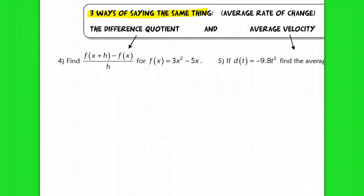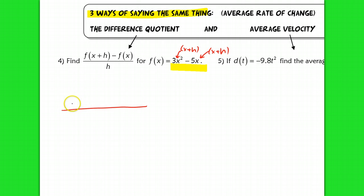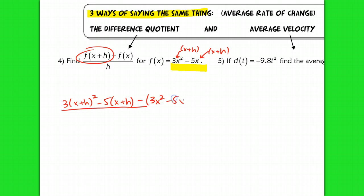Let's find the difference quotient for f(x) = 3x² − 5x. When you look at this, you don't evaluate for a specific interval like we did before with average velocity — here we just plug x+h in as the input. So for each x value, I plug in x+h. My numerator is going to look like this: 3 times (x+h)² minus 5 times (x+h). This takes care of f(x+h). Then I subtract f(x), which I need to put in parentheses so you don't forget to distribute the negative. All over h.